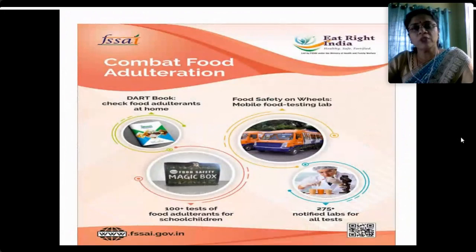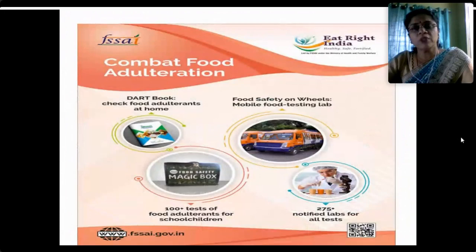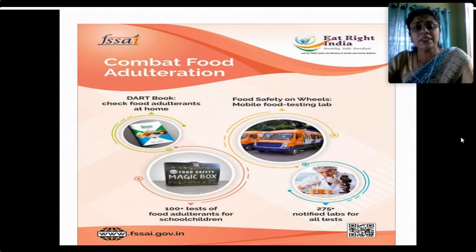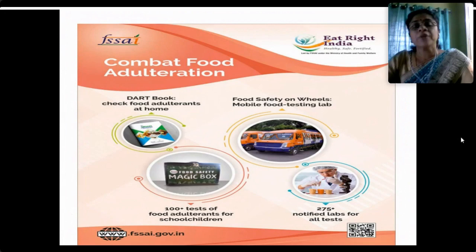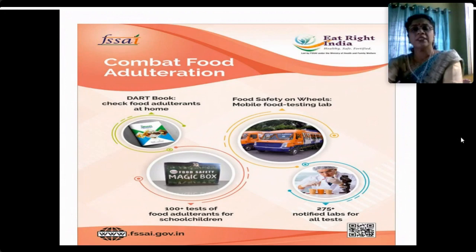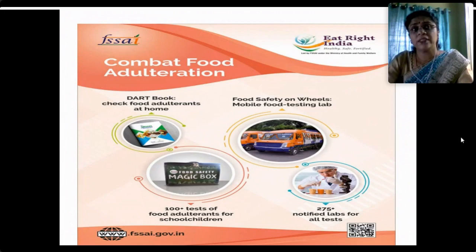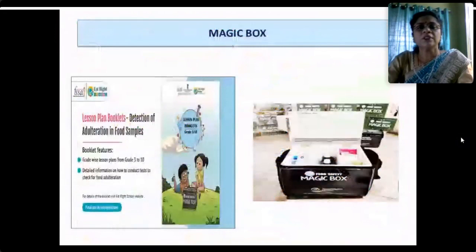Apart from the DART booklet, FSSAI under the 'Eat Right India' movement launched in 2018 is doing a massive campaign to combat food adulteration. They have come out with a 'Food Safety Magic Box' — a kit of 100 tests for food adulteration detection for school children, which is simple and safe to use. They have also launched mobile food testing labs which go around the city — you can take your ingredient or sample and get it tested. FSSAI has given accreditation to 275+ labs for reliable food testing.